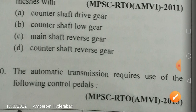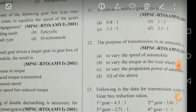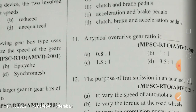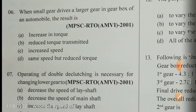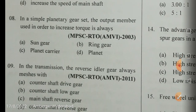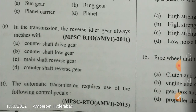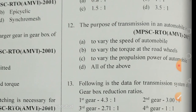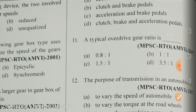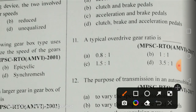The automatic transmission requires use of the following control pedals: acceleration and brake pedals. The first option — acceleration and clutch pedals — is not printed correctly. In automatic transmission, only the acceleration and brake pedals are used.